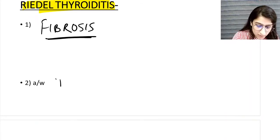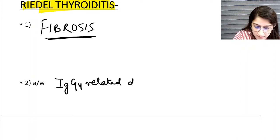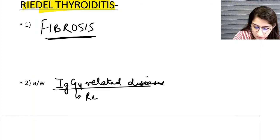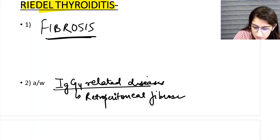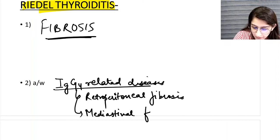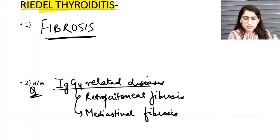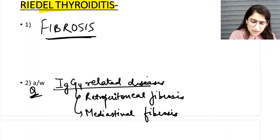It is associated with IgG4-related diseases, like retroperitoneal fibrosis and mediastinal fibrosis. It's a very important MCQ. About these IgG4-related diseases, we will